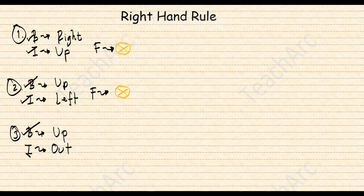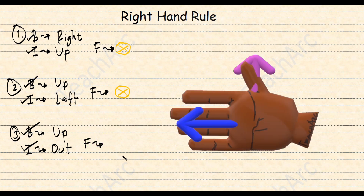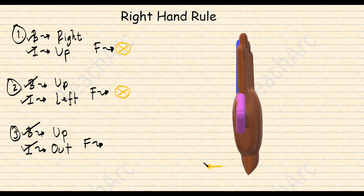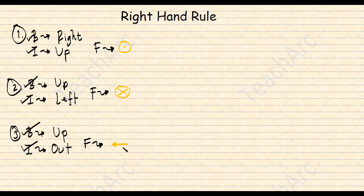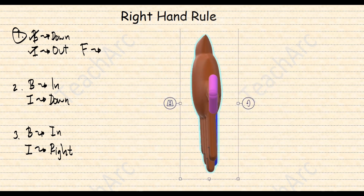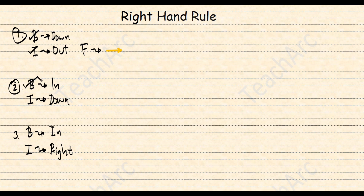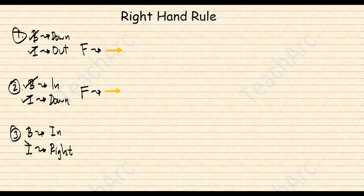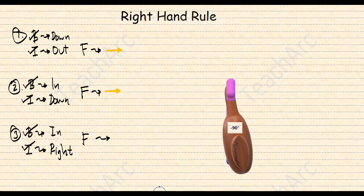For the next example, with the magnetic field pointing up and the current pointing out of the screen, the magnetic force would be to the left. For the following example, with the magnetic field pointing in and the current to the right, the magnetic force would be upward.